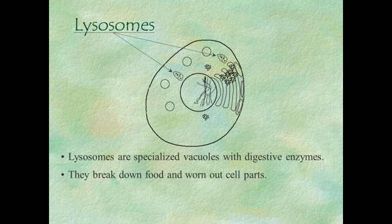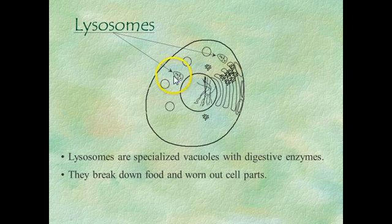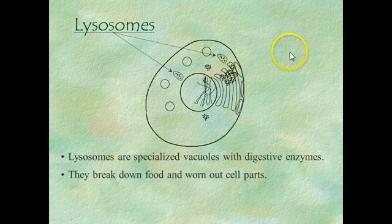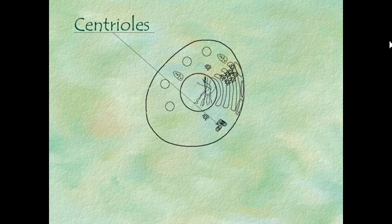Lysosomes break down food and break down worn-out cell parts. They contain enzymes that enable them to do that. This is another structure made out of the phospholipid bilayer.